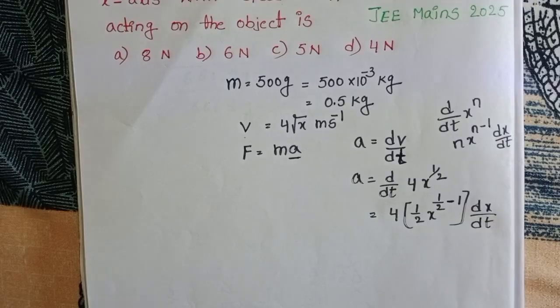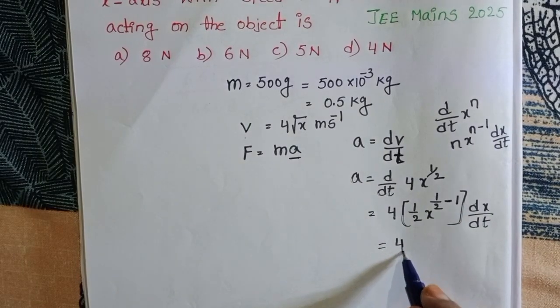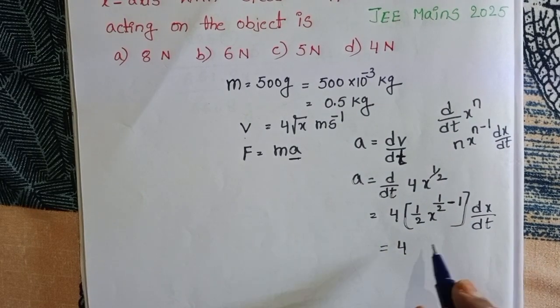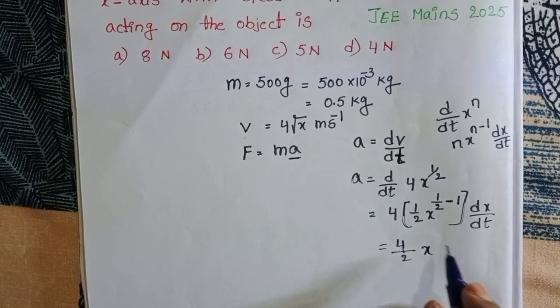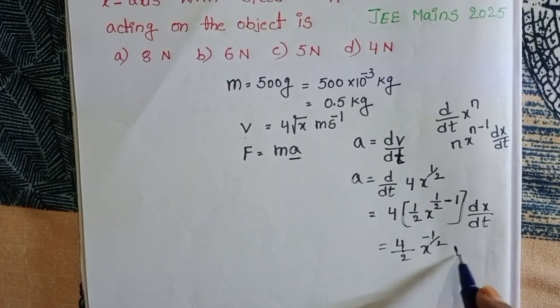In place of dx/dt, we use velocity. The rate of change of displacement is velocity, so we have x to the power minus 1/2 times v.